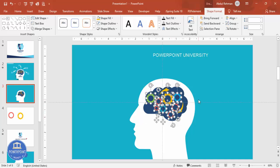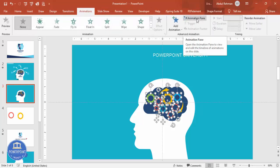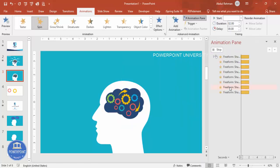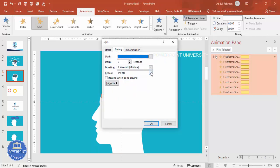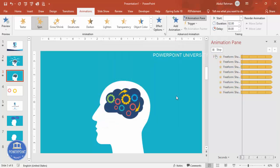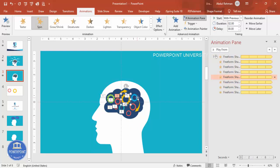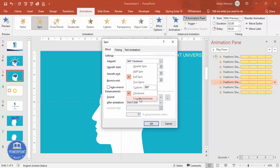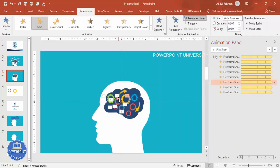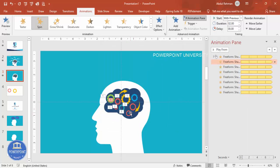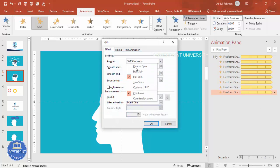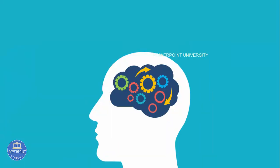Go to Animations and enable the Animation Pane. Add animation and from Emphasis select Spin — all selected shapes will now spin. Right-click, go to Effect Options > Timing, and set it to 'Until End of Slide', then click OK. For gears you want spinning counterclockwise, double-click the animation, go to Effects, select Counterclockwise, and click OK. Assign counterclockwise to whichever gears you prefer, leaving others clockwise.